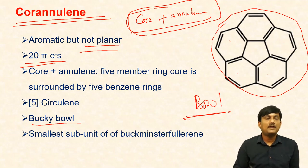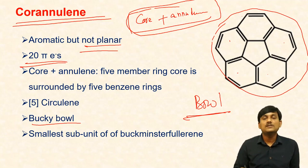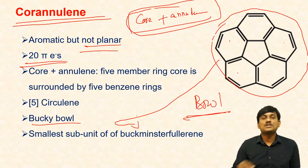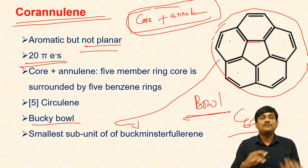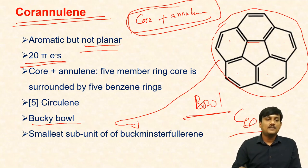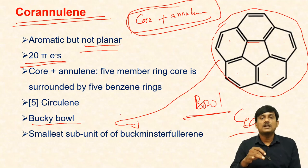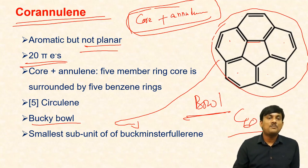Here five benzene rings are fused in circular fashion, and it is also called five-circulene. It is the smallest unit of Buckminster fullerene. In Buckminster fullerene — carbon-60 — it has pentagon units and hexagon units. The pentagon units are attached with five hexagon units. This is the smallest subunit of Buckminster fullerene. This compound is not planar, but it is aromatic.